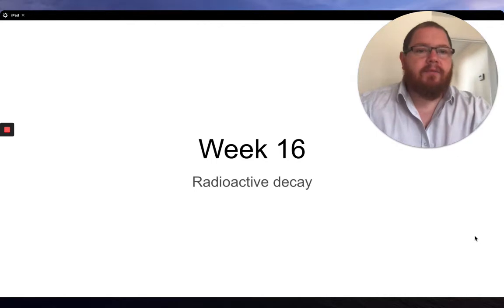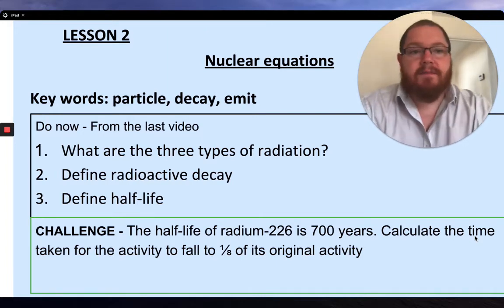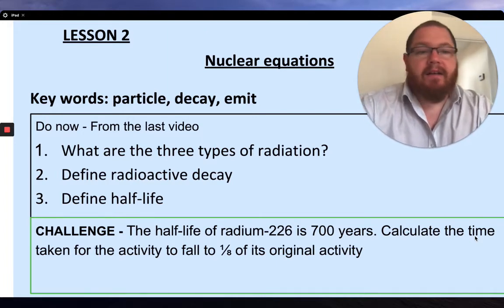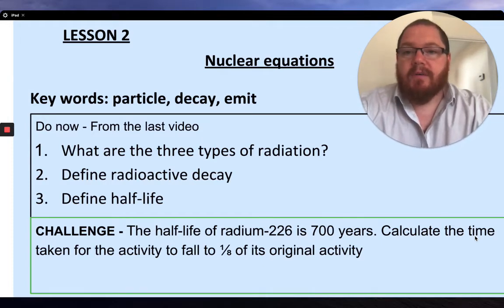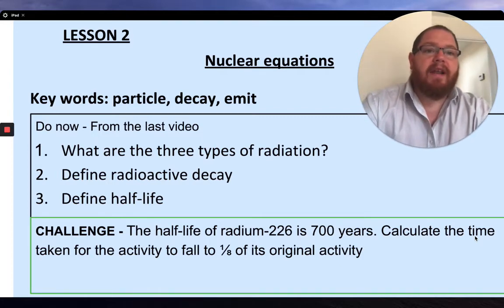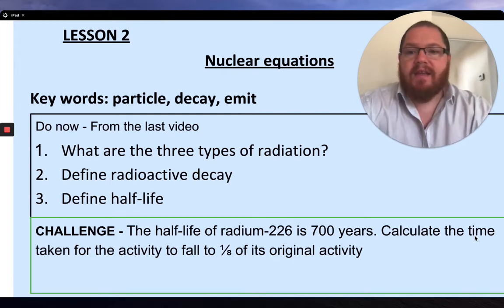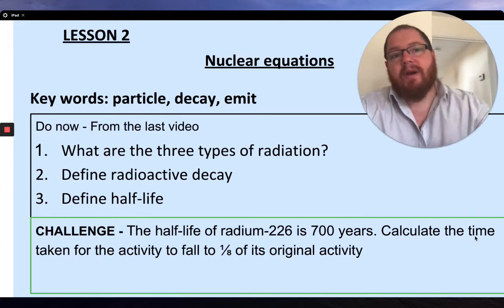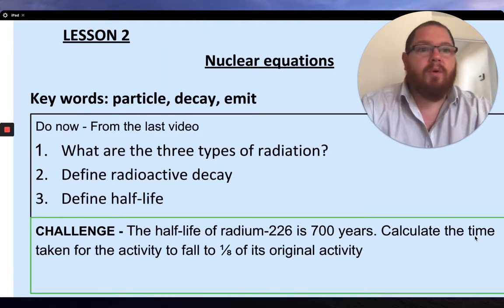Okay, so week 16, radioactive decay. This is the second lesson on radioactive decay. The first lesson was on calculating half-life and using the table, and this lesson is on nuclear equations. So your keywords: particle, decay, emit. You've got your three questions there relating back to the first lesson. So what are the three types of radiation, define radioactive decay, define half-life, and then we've got a challenge question on working out a half-life using that table. So press pause if you want and attempt these questions.